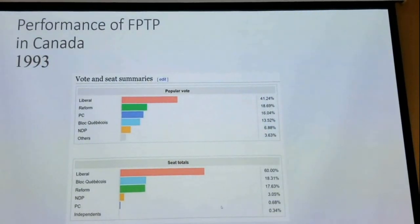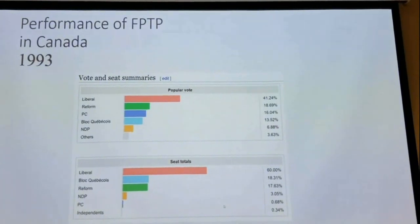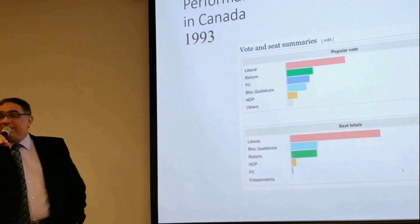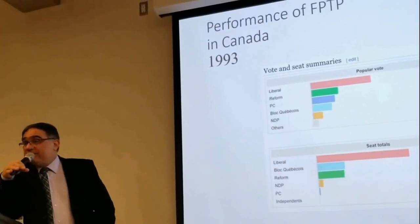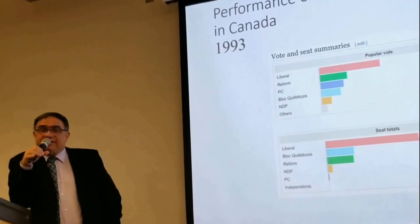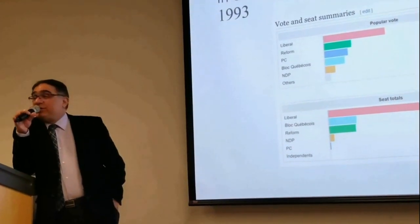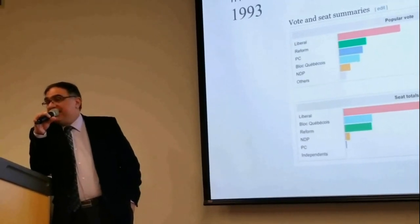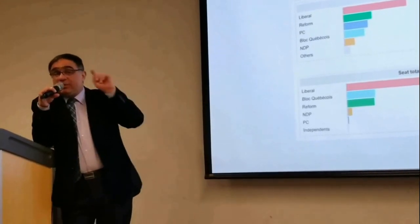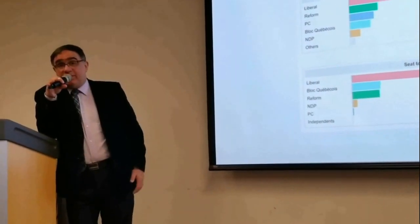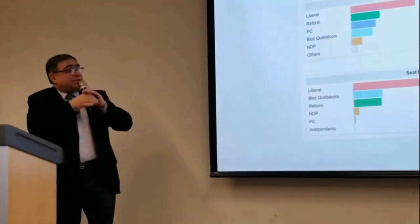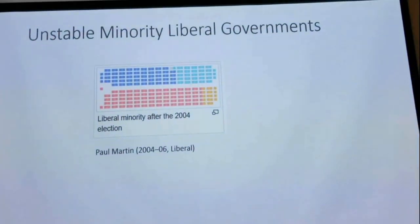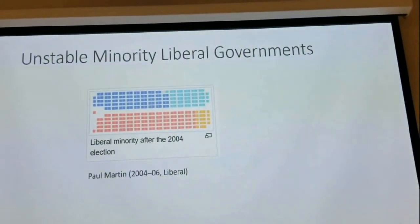In 1993, first-past-the-post in Canada: Liberals got power with 41% of the vote and got 60% of the seats — called a majority government. But 'majority government' doesn't mean the majority of people wanted it; it means the majority of seats are held. In the past 20 years in British Columbia, it was only once that the majority of people actually wanted what happened. 41% of the vote got 60% of the seats — the result is an unstable minority government with 100% of the power.